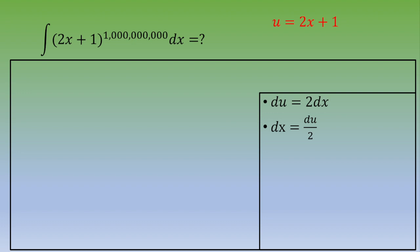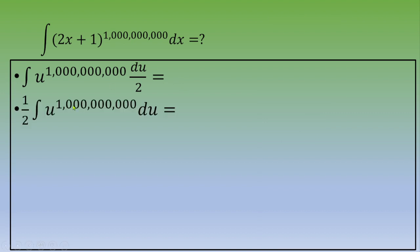And you obtain the integral of u to the power 1 billion times du over 2. One over 2 is a constant number, so you can put this constant outside of the integral. And you get, at the end, 1 over 2 times the integral of u to the power 1 billion du.